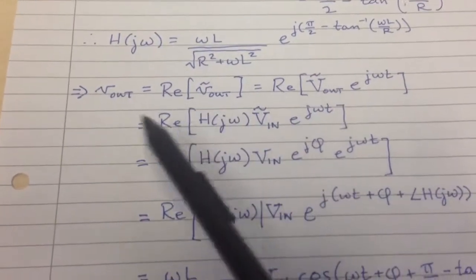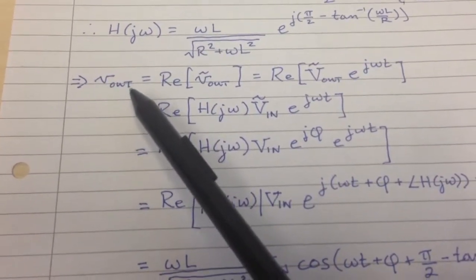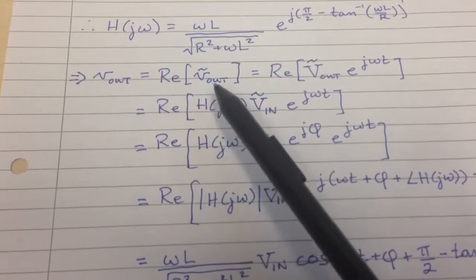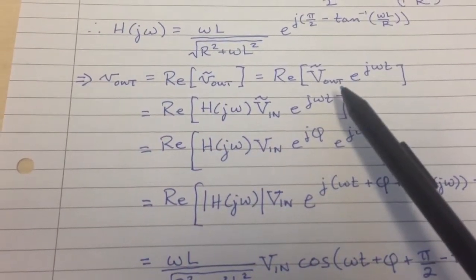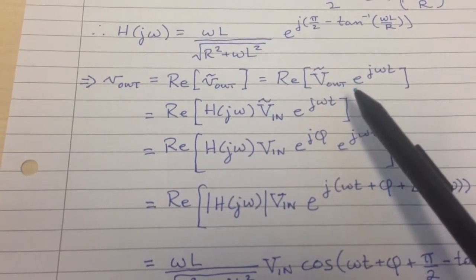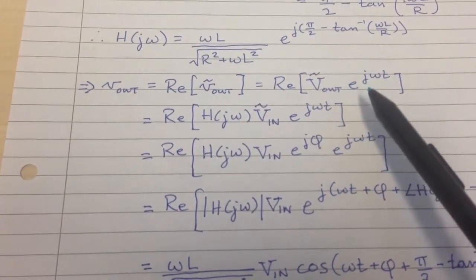Well, we're almost done because, if you remember, the output voltage was the real part of the complex V_O, which was the real part of this DC complex amplitude times that e^(jωt) term.